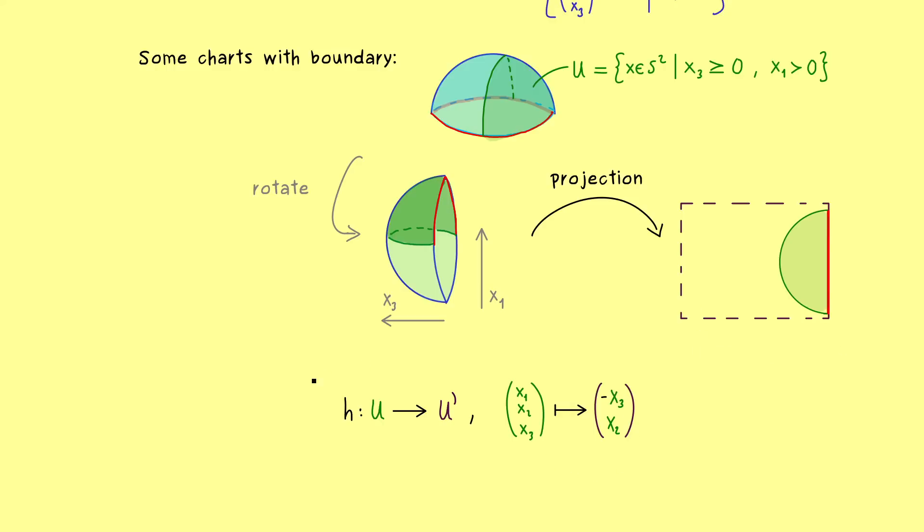So that's it, this is our homeomorphism, it's a well-defined chart into our half-space. And now you might believe me that we could simply repeat the whole construction for all the other quarters on the sphere.